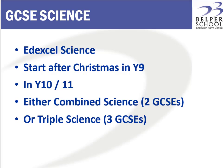If they do the combined science, the biology, chemistry and physics that they learn over the two years combines to give them two GCSEs worth of science knowledge.